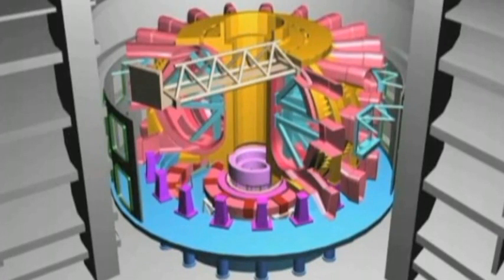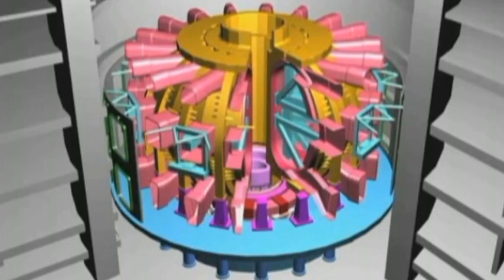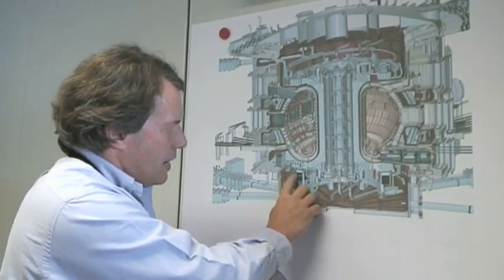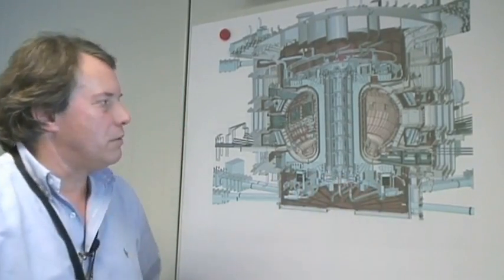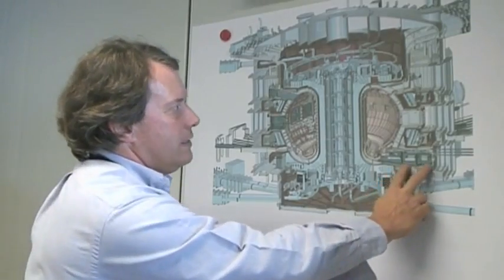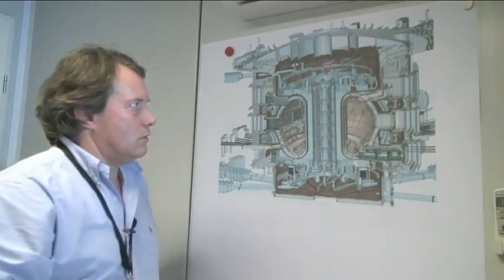Join the thermal shields together. And we weld the vacuum vessel sectors together. We proceed then by mounting these components that were temporarily placed in this area. We fill in the area around the machine. And then we complete the machine by installing the components up at the top.